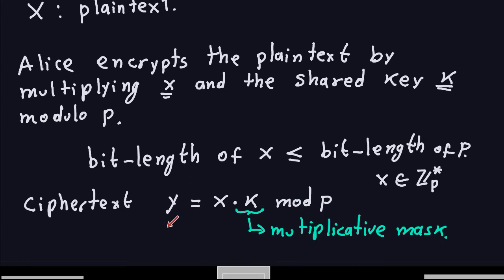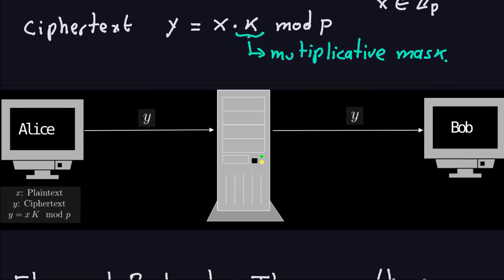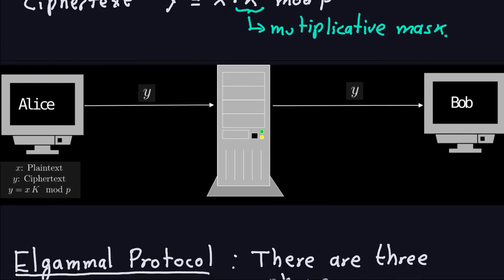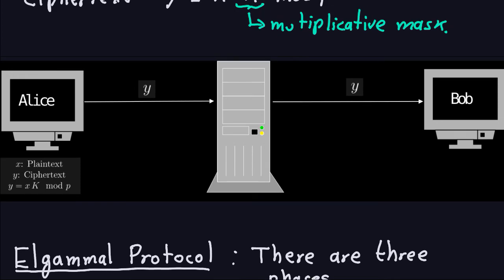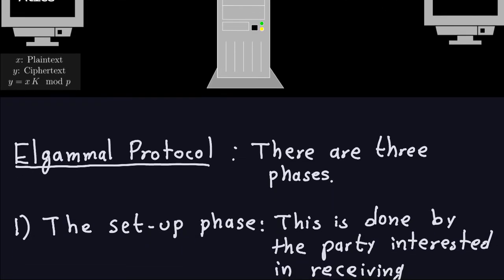Once she computes Y by modular multiplication, she sends that ciphertext through the insecure channel to Bob. So X is the plaintext, Y is the ciphertext — she multiplies the plaintext by the shared key modulo P, sends it through the insecure channel, and Bob gets it. That's pretty much the basic idea of ElGamal.